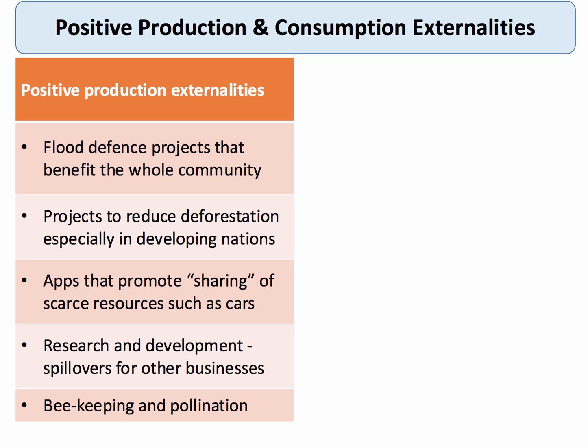The supply of an app that promotes the sharing of scarce resources — such as cars, or increasing the utilisation of freight and lorries on the roads — can have wider benefits in terms of reducing emissions and making more efficient use of road space. Research and development spending by businesses can have important spillovers, particularly when there are significant knowledge transfers. A lovely example is beekeepers maintaining a hive of bees, which of course has much bigger, wider, positive benefits in terms of the pollination of crops.